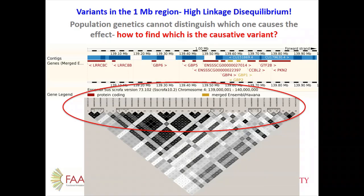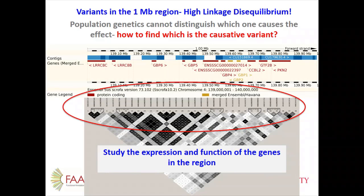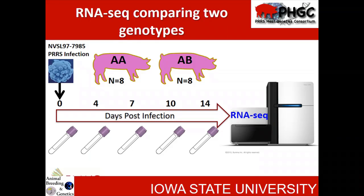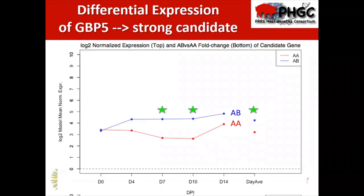So how do we try to find which variant is actually causative? One thing we can do is try to understand how these genes are expressed in different animals during infection and figure out which one is most important. We did an RNA sequencing experiment comparing the two phenotypes that were different for this particular marker, looking at RNA in blood over 14 days of infection. Focusing on genes expressed in that one-megabase region, we found one gene — GBP5 — that had a difference in expression over time after infection between the two genotypes. That became a very strong candidate gene: it was in the right region, and it was differentially responding to infection depending on the genotype.